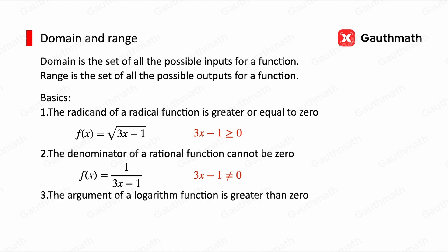And the third one: the argument of a logarithm function is greater than zero. So if we have log₂(3x - 1), then 3x - 1 > 0.